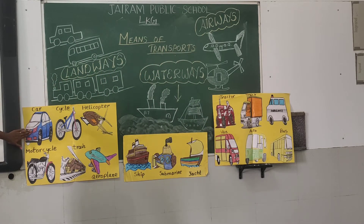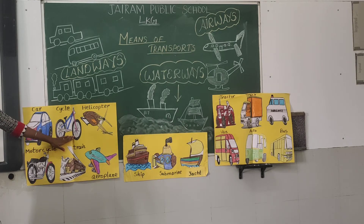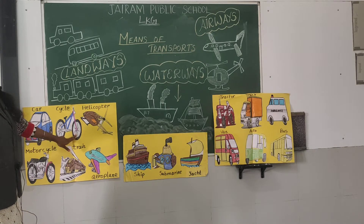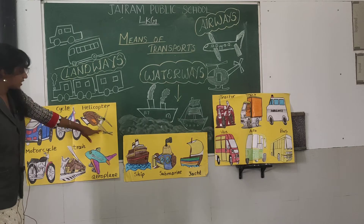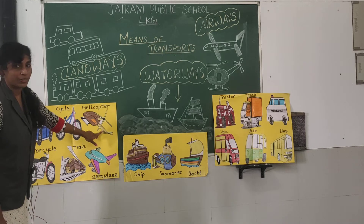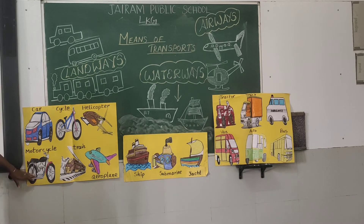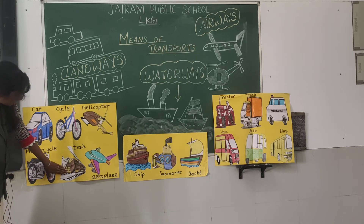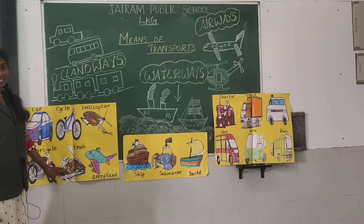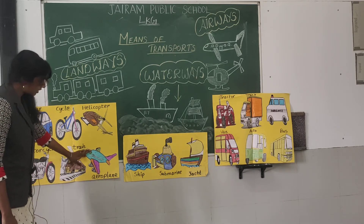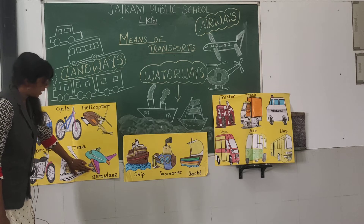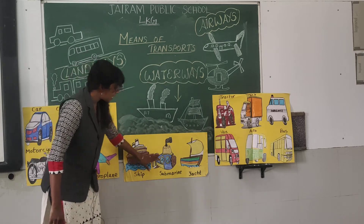Do you see pictures here? This is a car. What is this, children? This is a cycle — bicycle. What is this? This is a helicopter. What is this? This is a motorcycle. What is this? This is a train. What is this? Aeroplane.